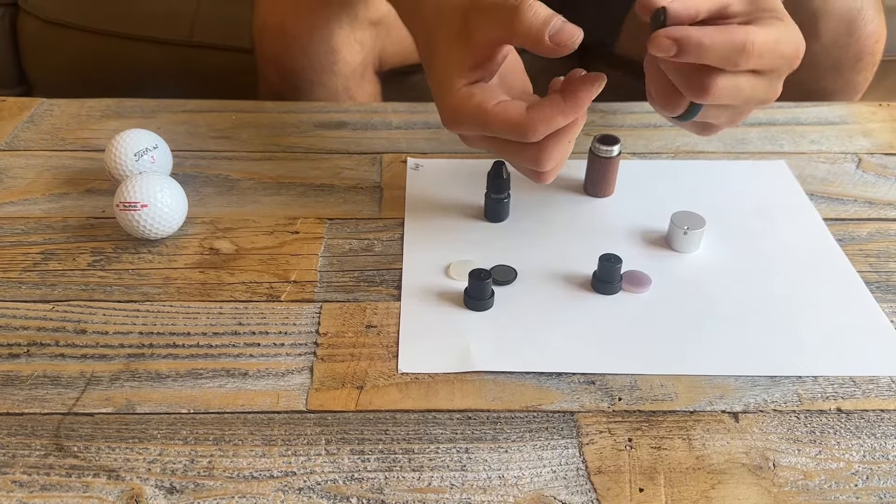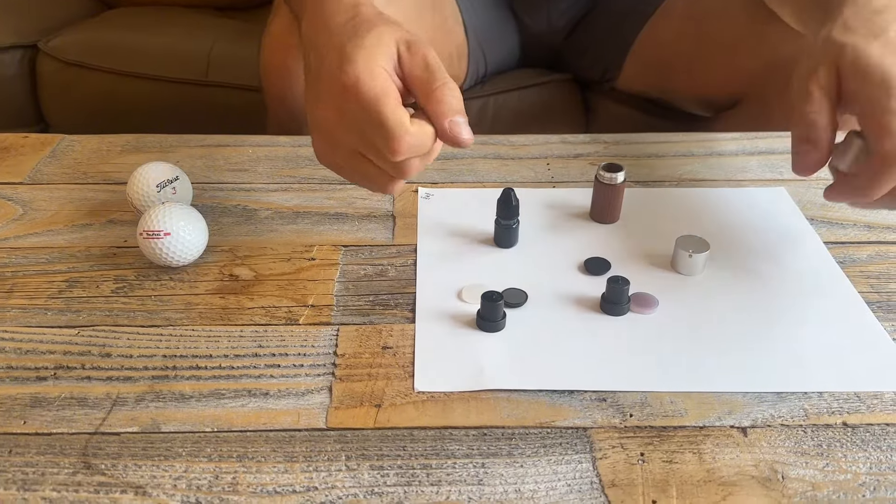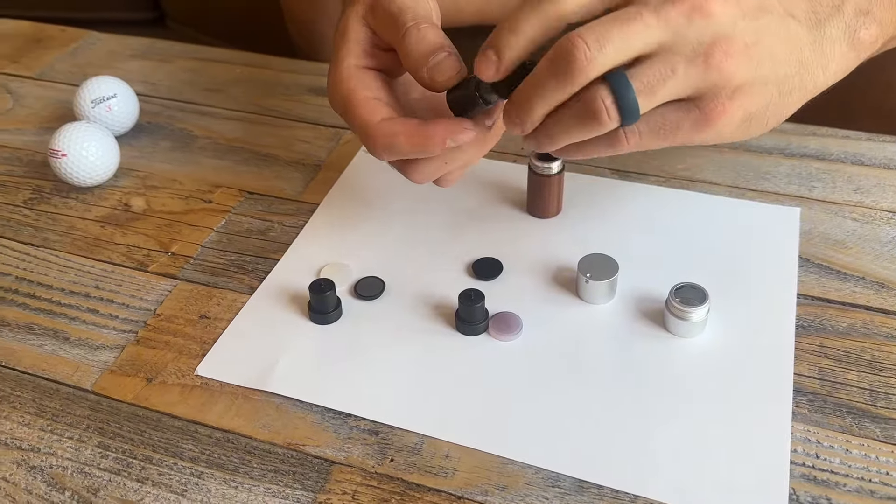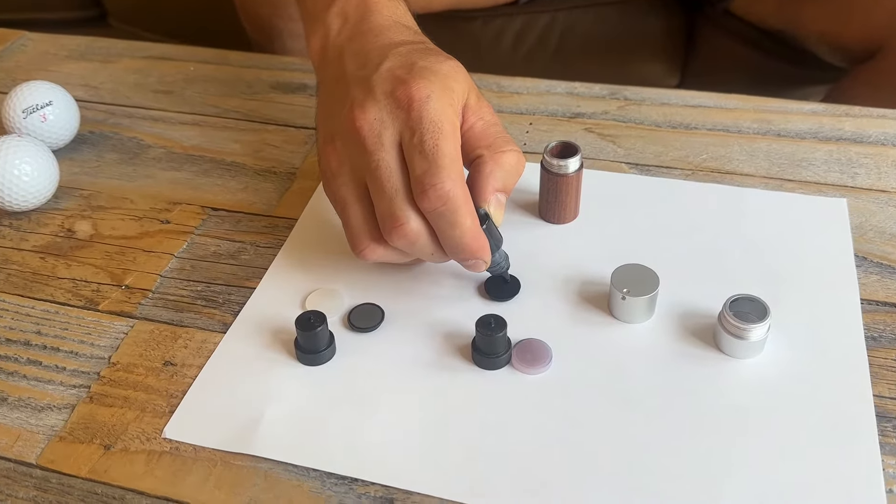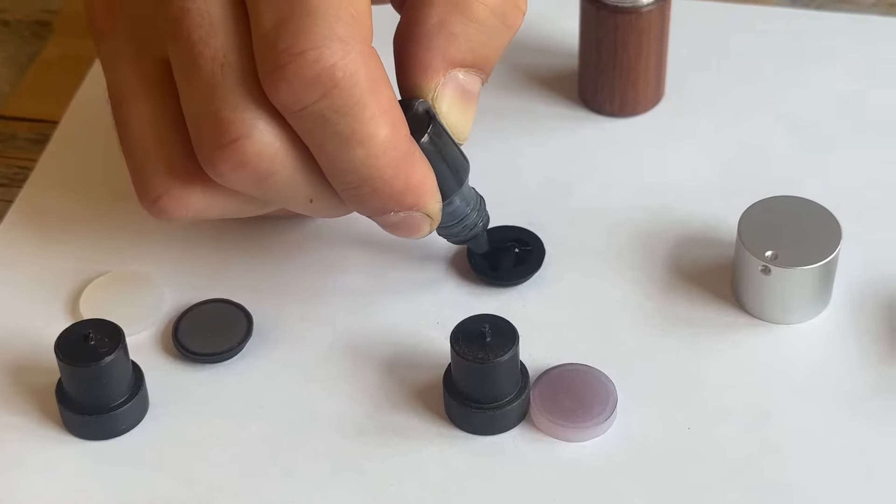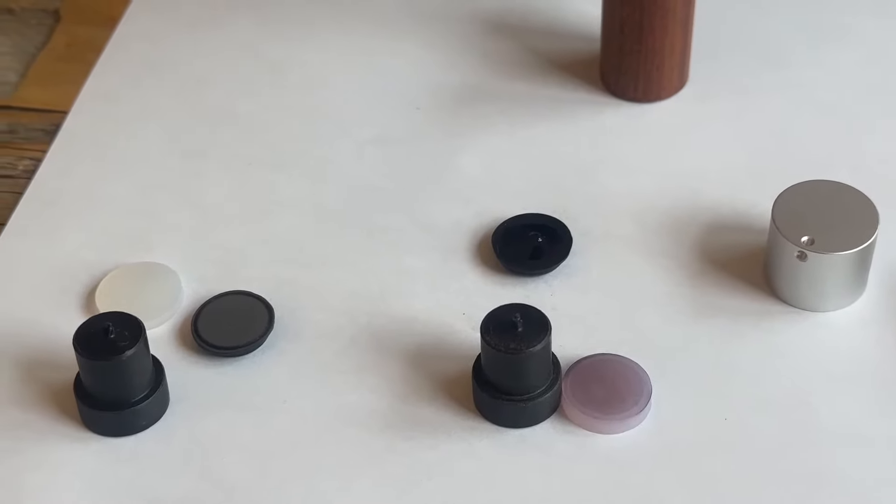We're gonna flip our stamp upside down so our image's on this side, we're gonna flip it over. We're gonna take our ink that comes in the set. We're just gonna add a couple drops right to the top here. You'll notice after a few seconds it starts to absorb.